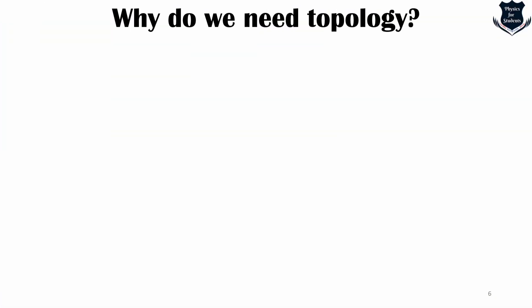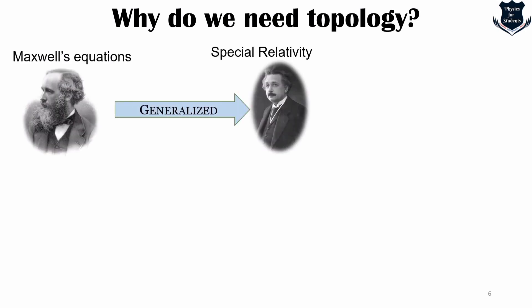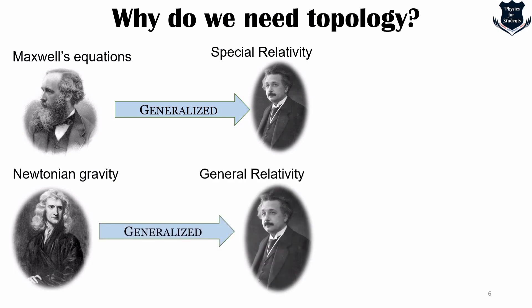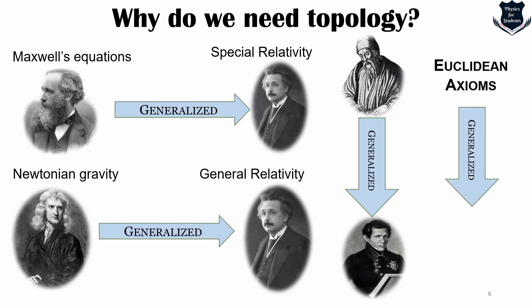If you consider the development of scientific processes: Maxwell's equations were further generalized by Albert Einstein in the special theory of relativity. Newtonian gravity was generalized into spacetime curvature by Albert Einstein in general relativity. The Euclidean postulates were further generalized into what is called non-Euclidean geometry by Nikolai Lobachevsky. And the Euclidean axioms got generalized into topological axioms, which is the main purpose of this video.